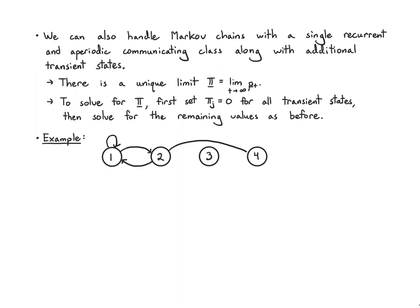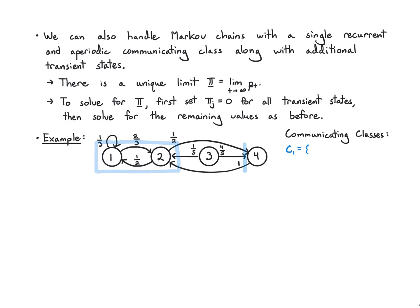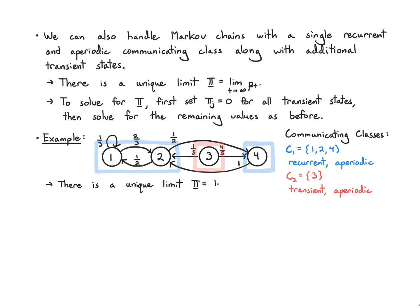Here's a Markov chain with some transient states. State 3 is leaking out its probability. Class 1 consists of states {1, 2, 4} — a recurrent class that is aperiodic due to the self-loop on state 1. Class 2 is just state 3, which is a transient class. Since there's a unique limit, I set the transient state's long-run probability to zero: pi_3 = 0.